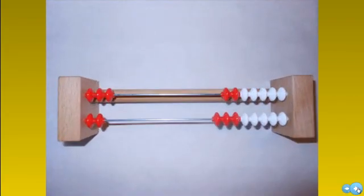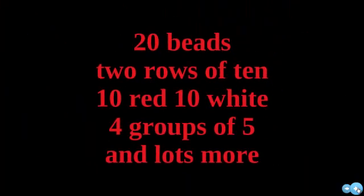What is the Rec-N-Rack? Well, this is what a Rec-N-Rack looks like, and as you look at the screen, go ahead and take a mental picture of some things that you recognize. Some of the things you might have recognized is that there's 20 beads, 2 rows of 10, 10 red, 10 white, 4 groups of 5, and lots lots more.